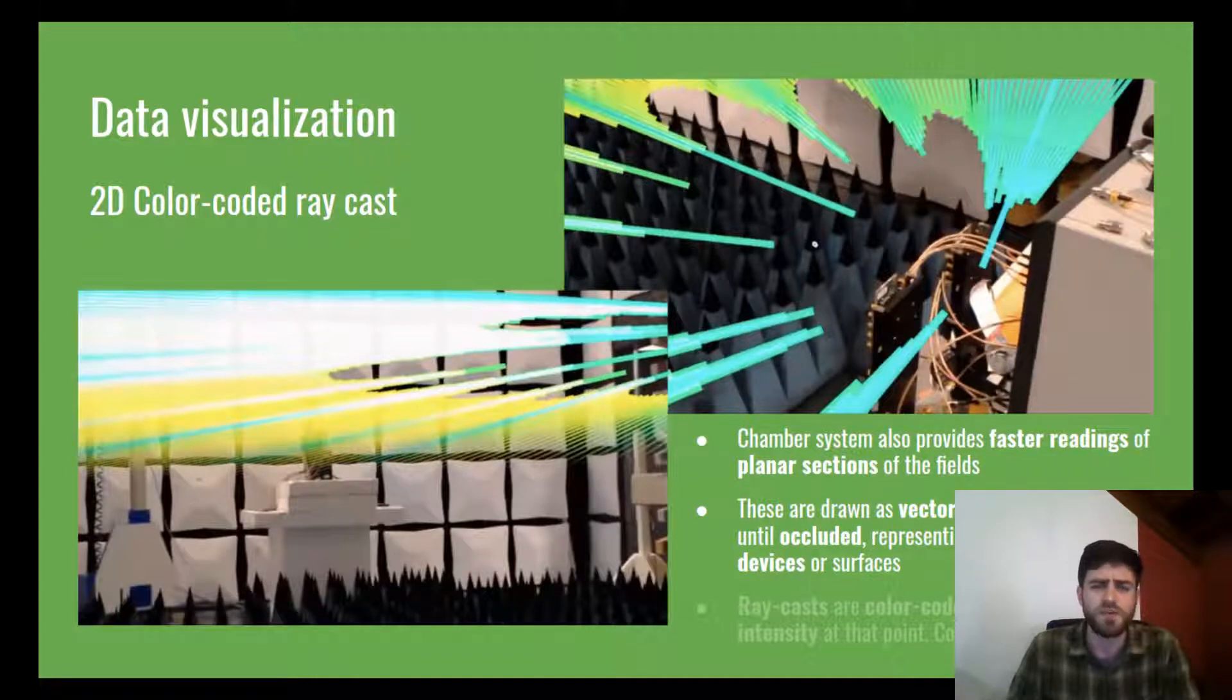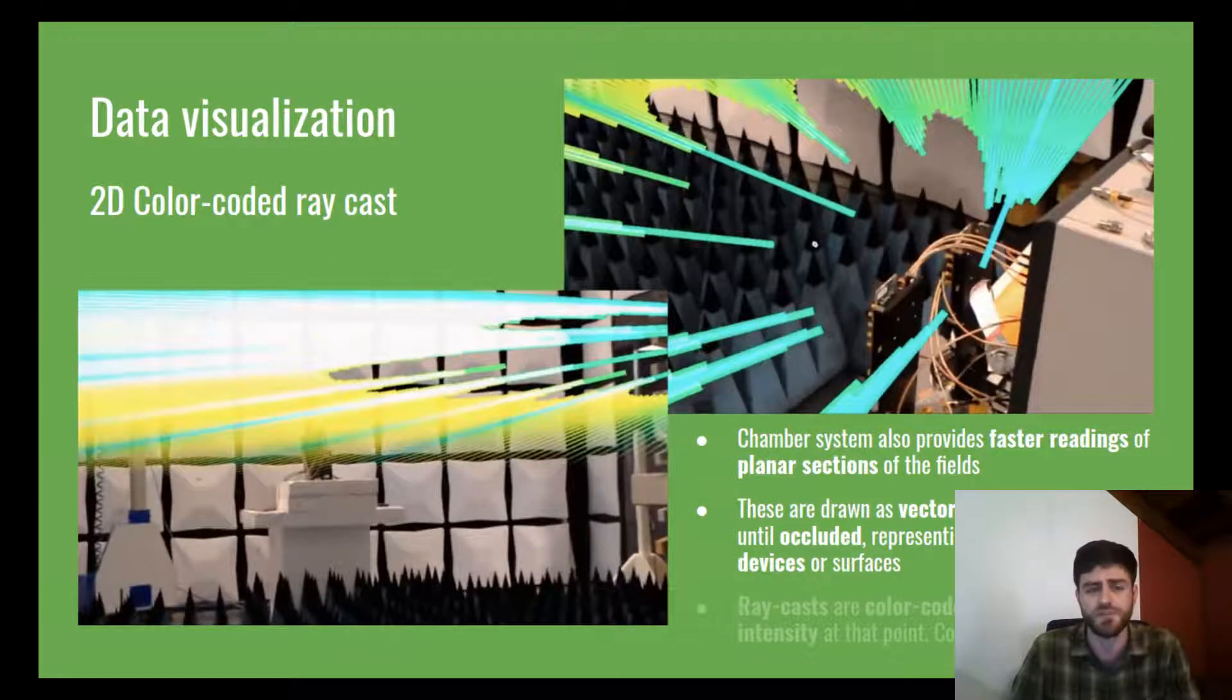Each one representing the intensity of the field at that point. These vectors expand as ray casts until they are occluded by real objects, representing a collision with another device or surface.